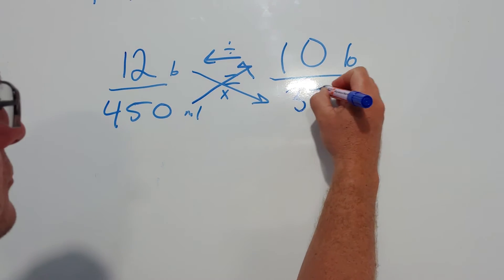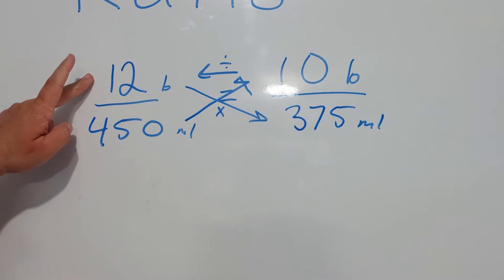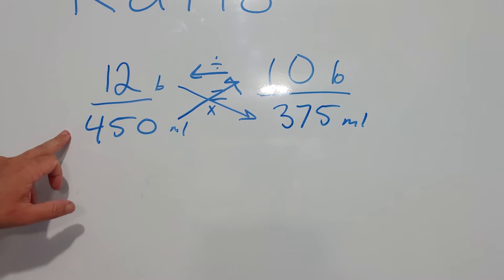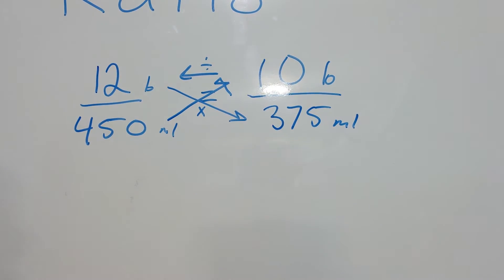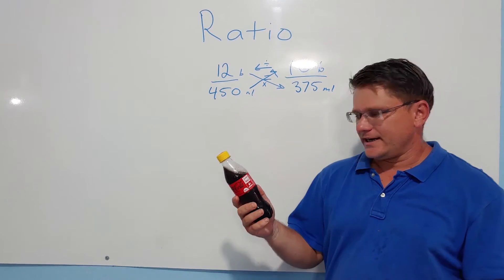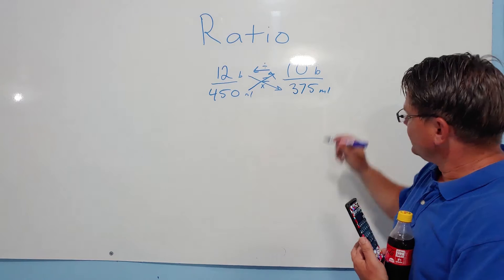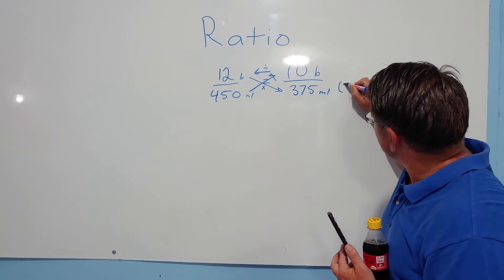So you've got, if you pay 12 baht you get 450. If you pay 10 baht you should get 375. Now we're going to take a look at the 10 baht bottle. It actually has 330.